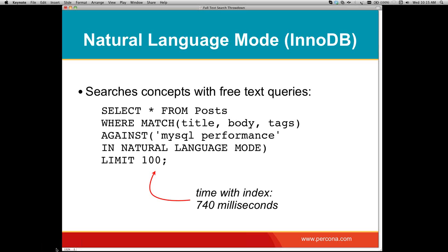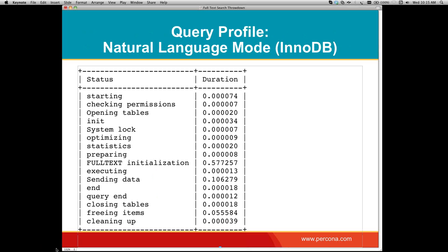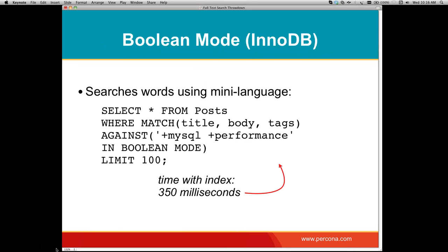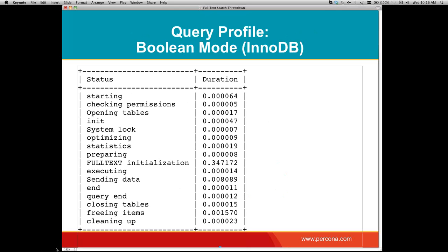Using the full-text index in InnoDB is very similar. In natural language mode it ran in 740 milliseconds, and like with MyISAM a large portion of that time was spent in full-text initialization followed by sending data. Boolean mode was faster — only 350 milliseconds — though still a lot slower than MyISAM. Full-text initialization is still the majority of that 350 milliseconds. The developers have discussed developing parallel execution so building and querying the index can be done in multi-threaded fashion, but it's unclear if that will make it into 5.6.